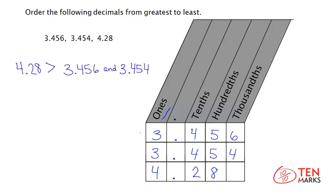It is the largest number. Now let's compare 3 and 456 thousandths and 3 and 454 thousandths from the tenths place on. The tenths digit of the two numbers are both 4. They're equal, so move on. The thousandths digit of the first number is 6, and the thousandths digit of the second number is 4. Since 6 is greater than 4, 3 and 456 thousandths is greater than 3 and 454 thousandths.